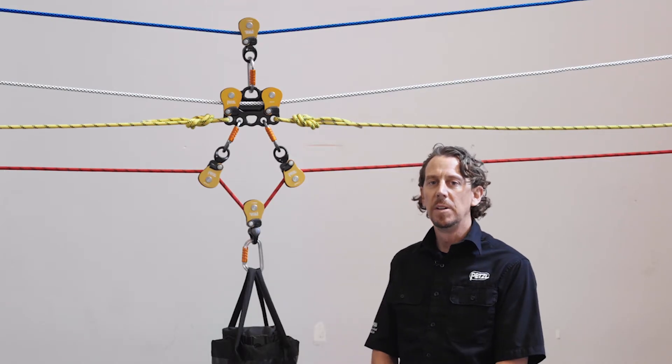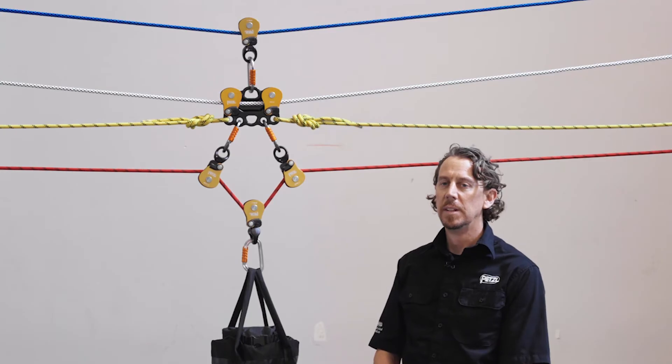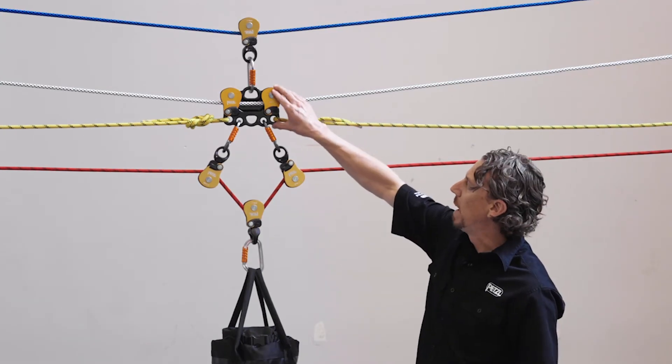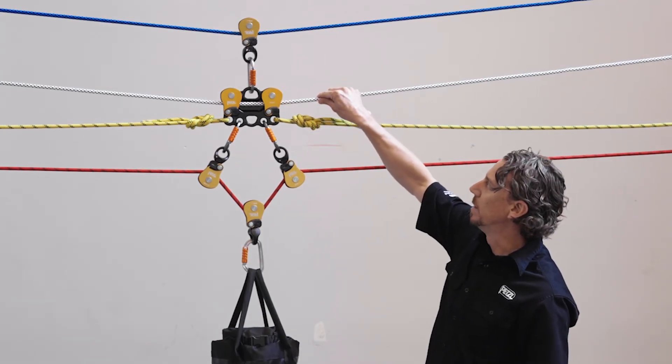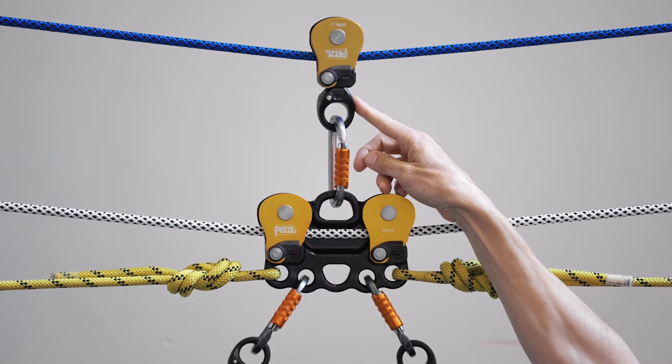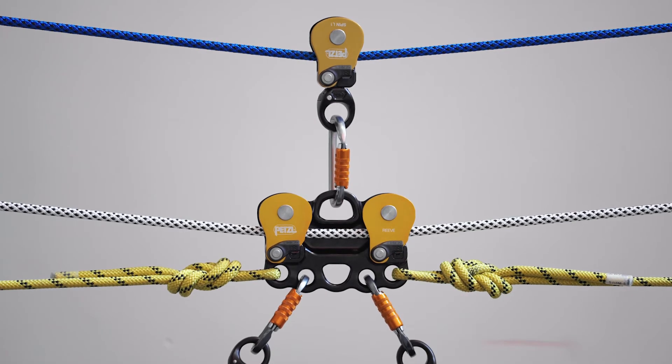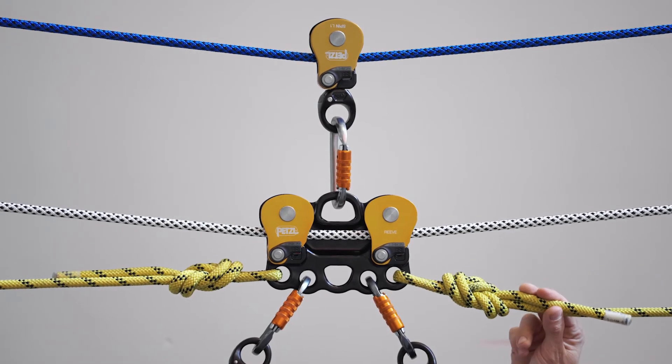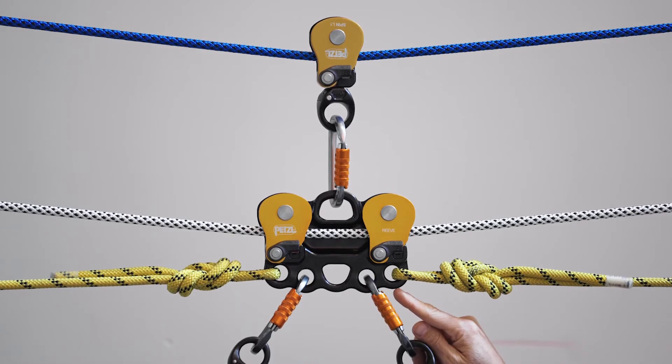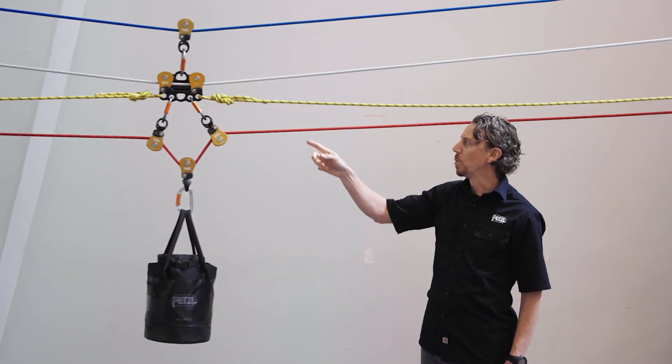All right, so in this setup, we have two tension track lines to create a redundant system. Now the Reeve will travel back and forth on the lower track line, but is also connected to the upper track line with a separate pulley connected to the upper attachment point on the Reeve. We've also installed control lines on the lower outermost connection hole of the Reeve. This will allow the team to move the Reeve back and forth horizontally.